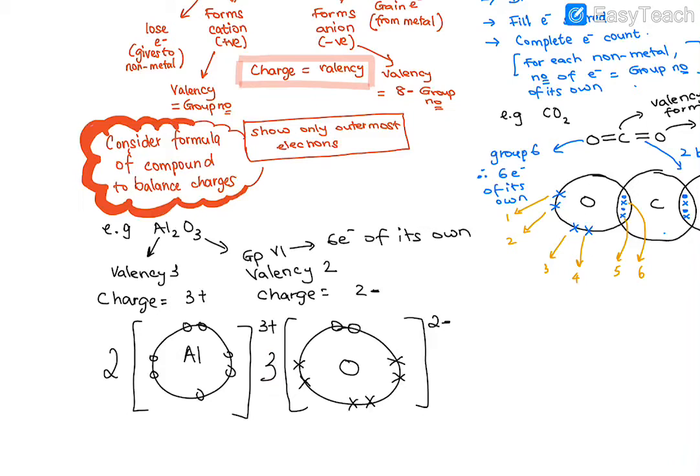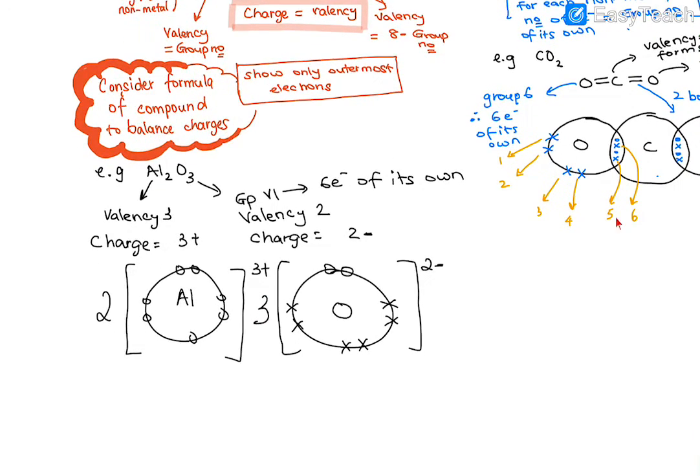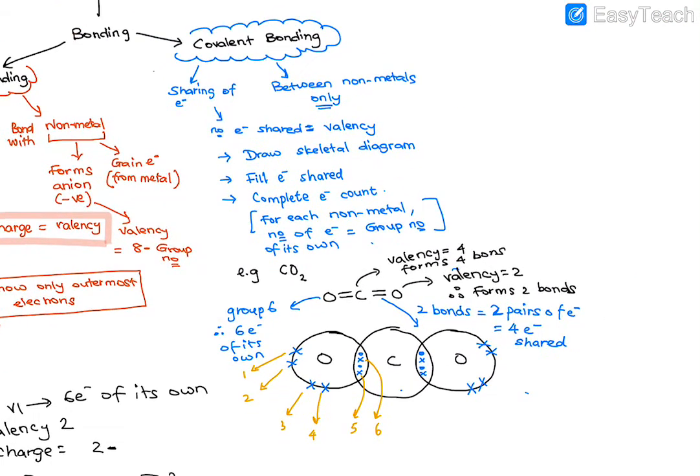Now for covalent bonding: covalent bonding is the sharing of electrons and it occurs only between non-metals. The number of electrons shared will be equal to the valency of that non-metal.